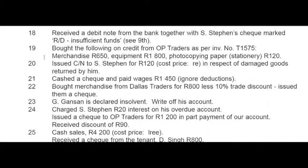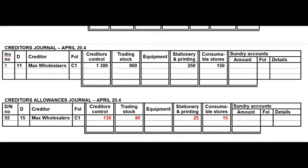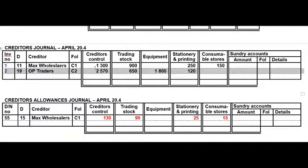On the 19th we bought merchandise, equipment, and stationery on credit from OP Traders. Remember we renumber credit invoices received from creditors. In the Creditors Journal it will look like this — the creditors control value is just the total of all the individual values.